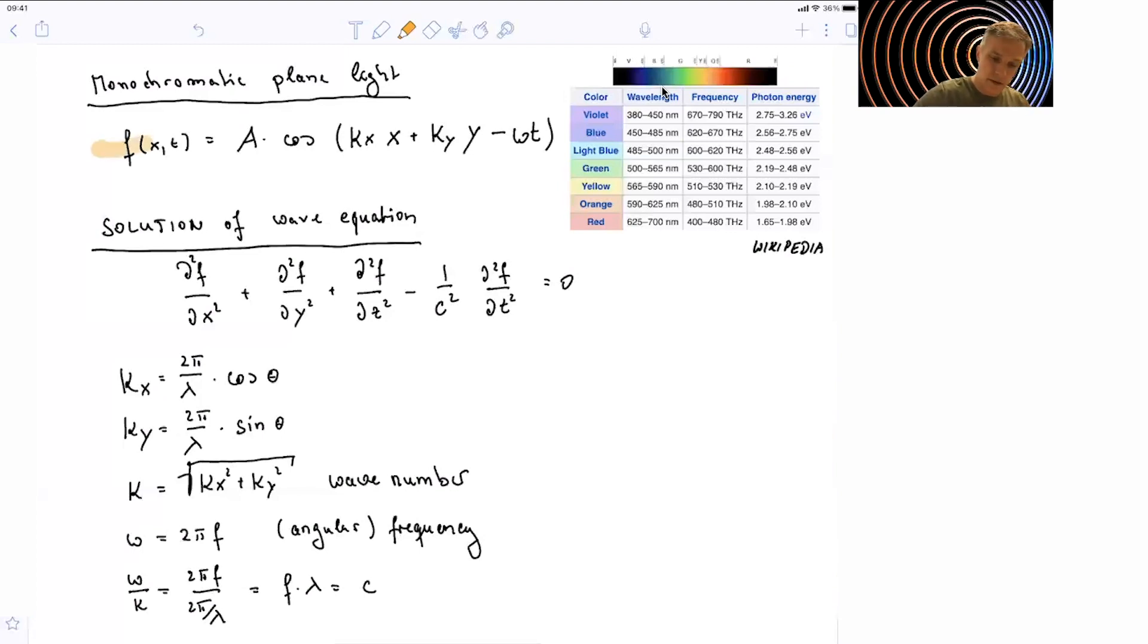So here you see our monochromatic plane wave. We have an amplitude A and then just a simple cosine, which is a function of x, y, and t time. This is the solution of the wave equation. And we have already seen this as part of the p sets, but also discussed in class.